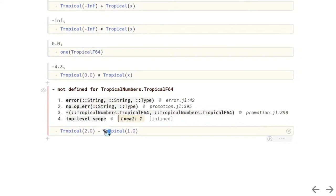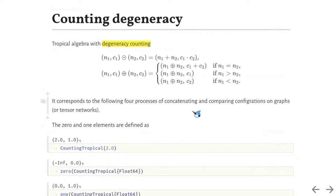we do not have the minus operation anymore. This is why it is called a semi-ring algebra rather than a ring algebra. However, what we want is counting the ground state degeneracy.